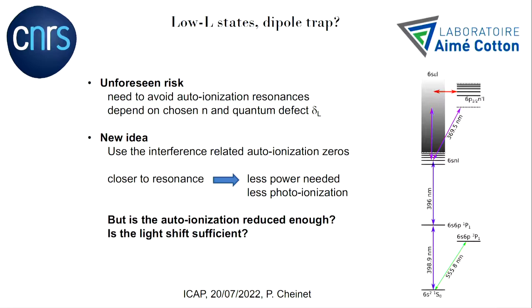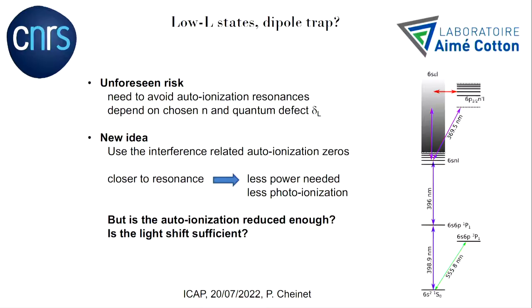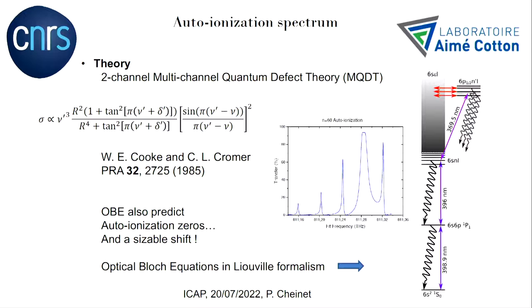Because of these auto-ionization resonances, there is an unforeseen risk that if you choose a certain detuning — even far from resonance — you might land on one of those resonances and have one or two orders of magnitude more decoherence than expected from a simple Lorentzian from the main peak. You can tune the wavelength to avoid this. But there is also the new idea to use the auto-ionization zeros to get closer to resonance, needing less power and less photo-ionization. The main question is whether there is enough reduction of auto-ionization and whether the resulting light shift is sufficient.